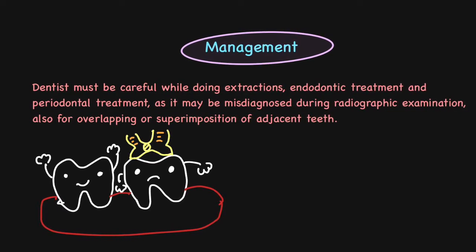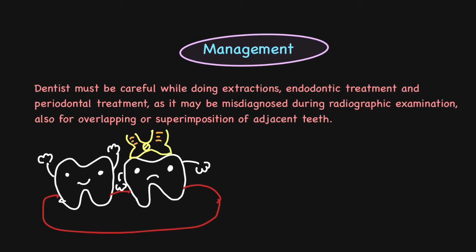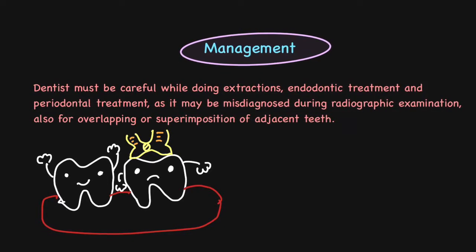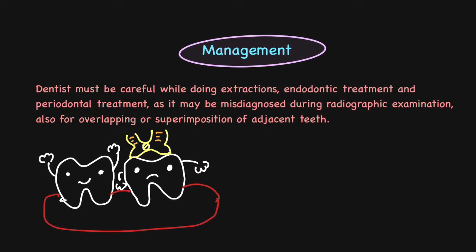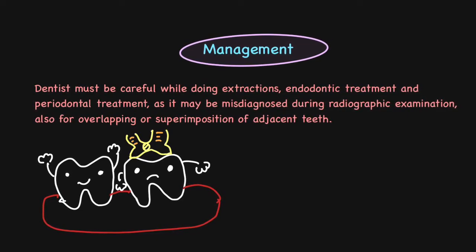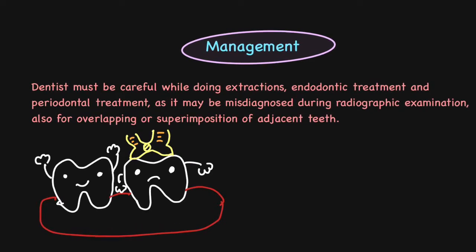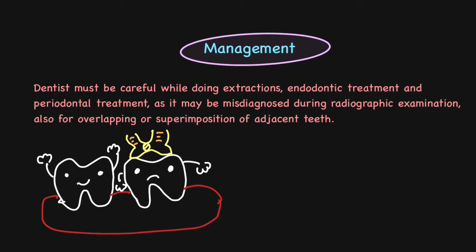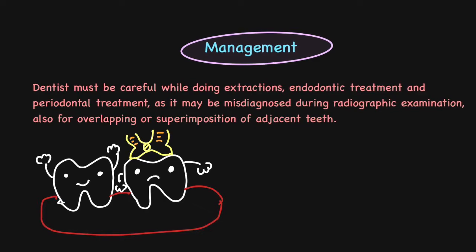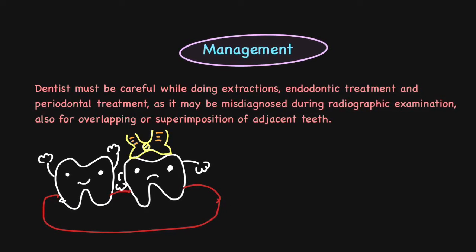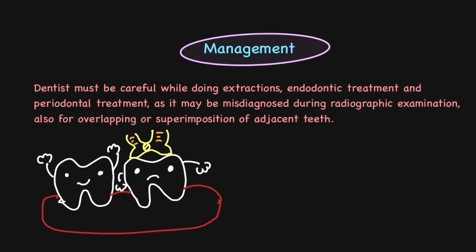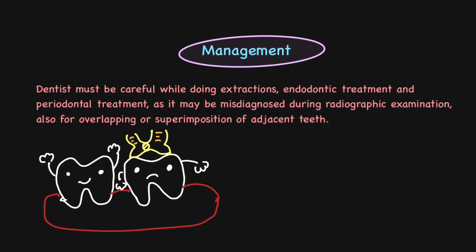In periodontal treatment, when scaling is performed, the roots being united below the CEJ means the scaler might get engaged in deep furcation areas, which may unnecessarily tear the cementum layer and cause patient hypersensitivity. In cases of endodontic treatment, because there is deposition of hard tissue at the root level, endodontic treatment becomes very difficult. Files placed inside a very small canal may not be able to negotiate the canal properly if there is any anomaly in tooth shape, leading to endodontic mishaps and failures. The foremost precaution is to take an IOPA of any tooth before undergoing any dental treatment.